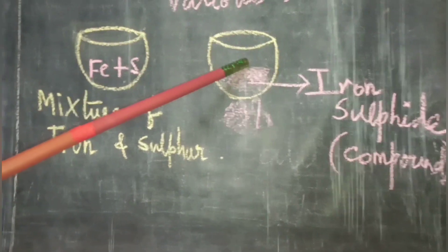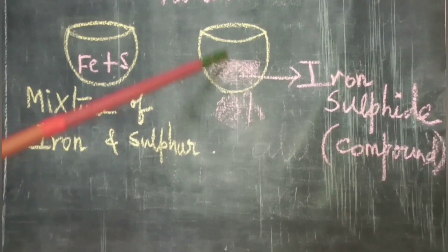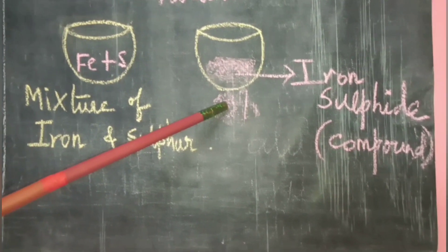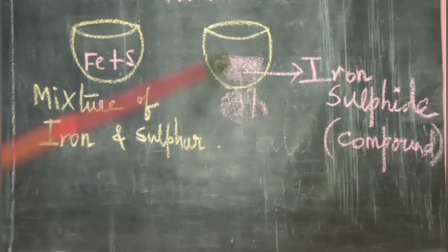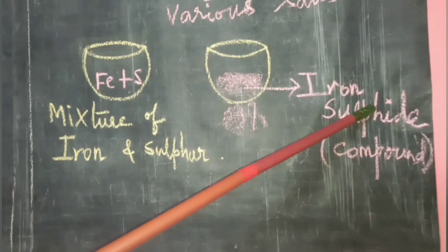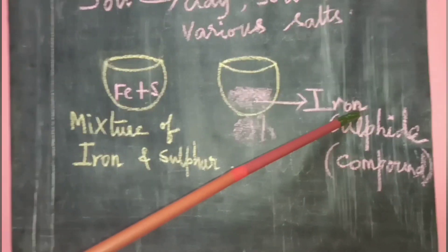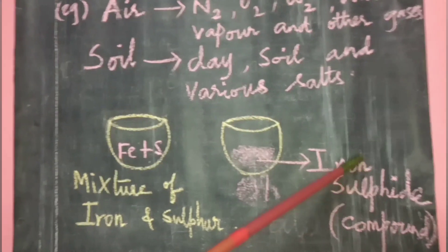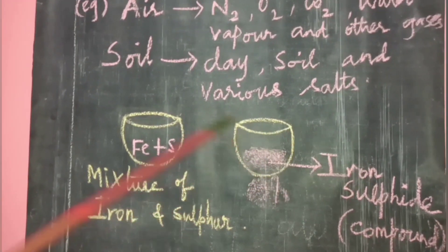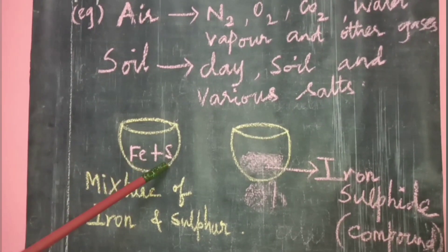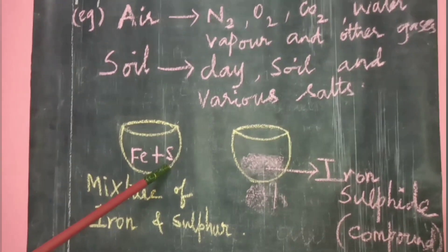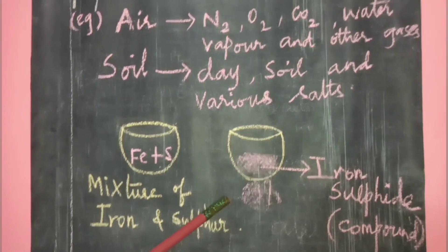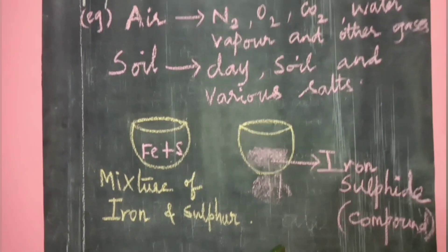Here the iron and sulfur are mixed together. In the next china dish, the same mixture of iron and sulfur is heated. When heated, it forms a compound — iron sulfide. Iron sulfide is a compound, and its properties are different from the individual properties of iron and sulfur.